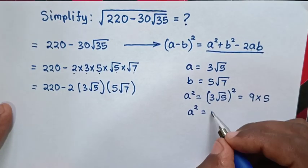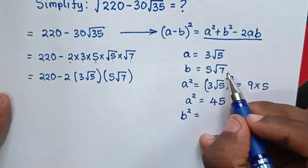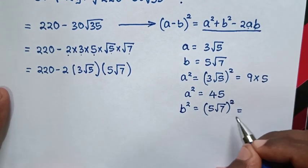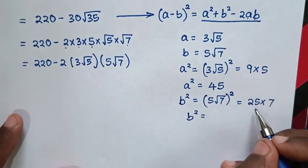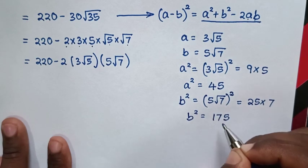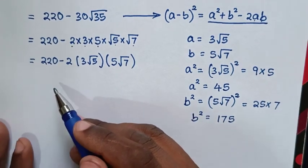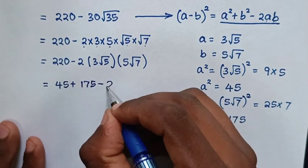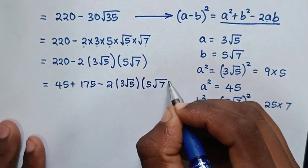Then, to find the value of b squared: b squared equals (5 square root of 7) squared, which is 5 squared times square root of 7 squared, equal to 25 times 7. So b squared is equal to 175. As we verify the value of a squared plus b squared: 45 plus 175 equals 220, minus 2 times 3 square root of 5 times 5 square root of 7.